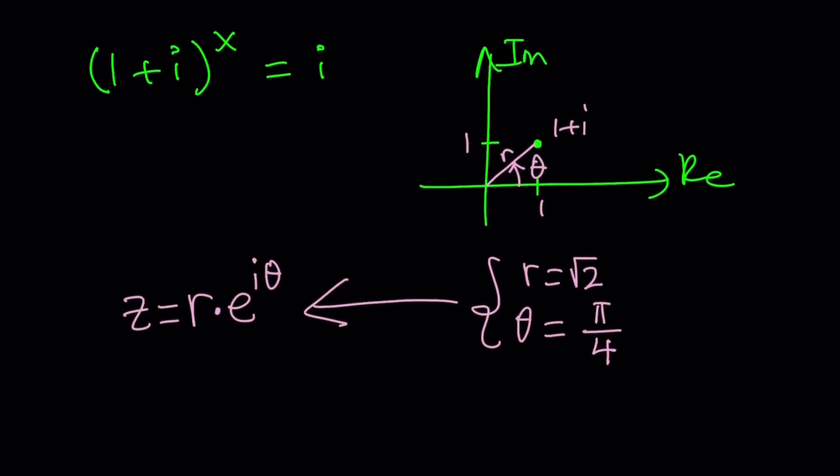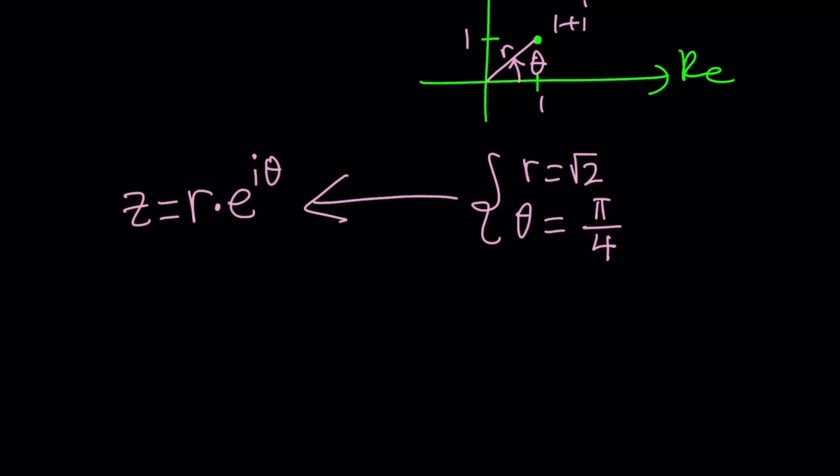Let's go ahead and write 1 + i this way since we already know r and θ. 1 + i can be written as √2·e^(i(π/4 + 2nπ)). If I just leave it at that, this would be the principal branch. But there are infinitely many branches because this is basically kind of like a multi-valued function. So I'm going to add multiples of 2π because you can make rotations on the circle.